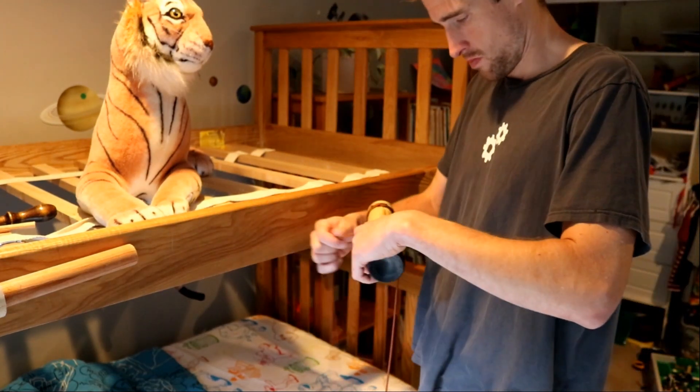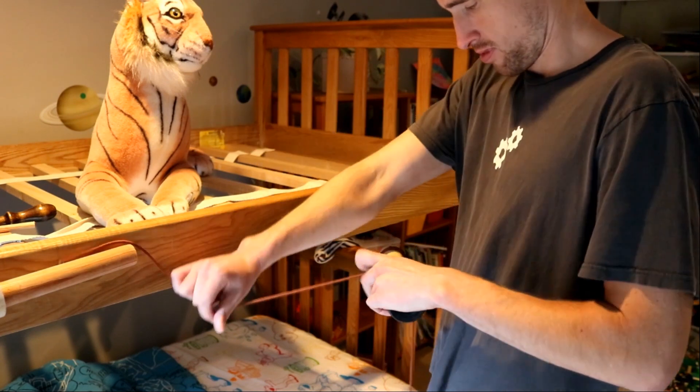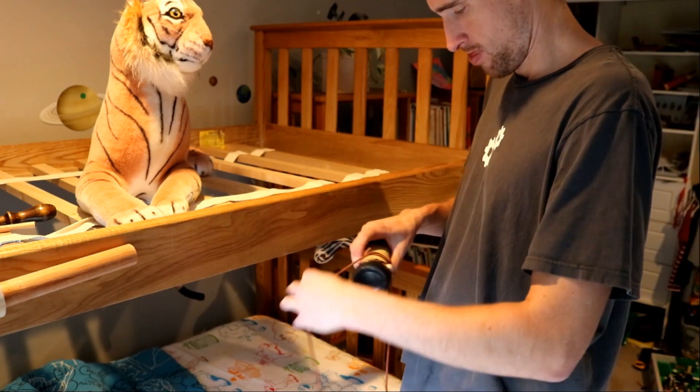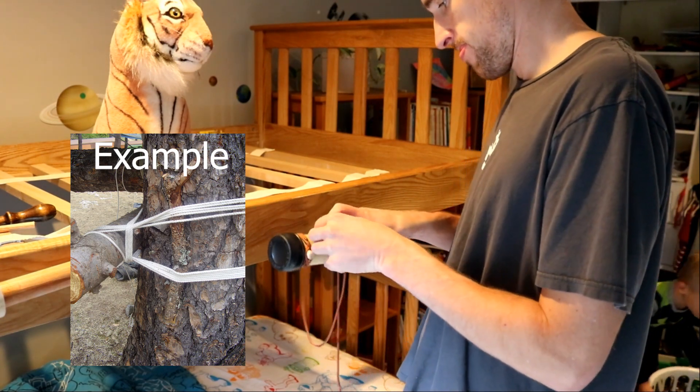Hi, my name is Doug with Atwood Engineering and today I'm going to be showing you how to do an extremely tight square lashing using paracord.